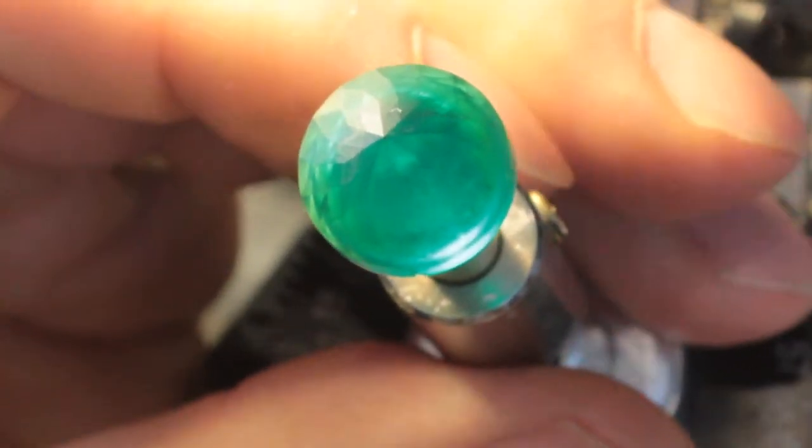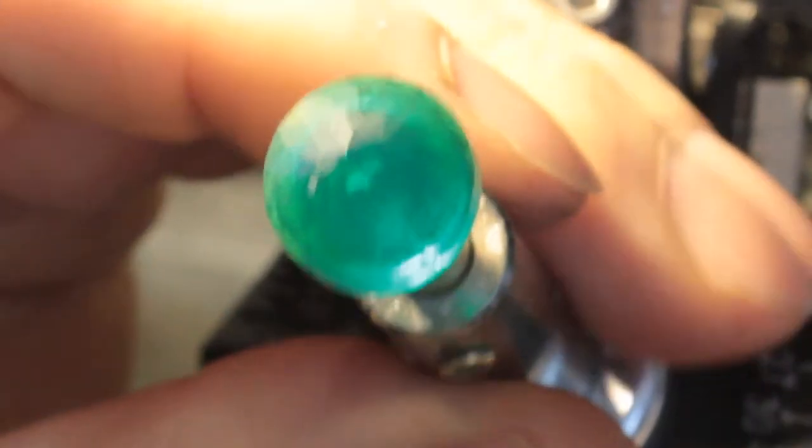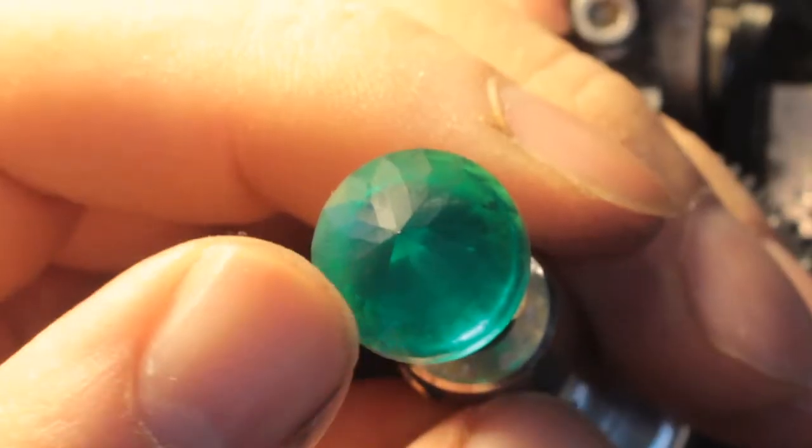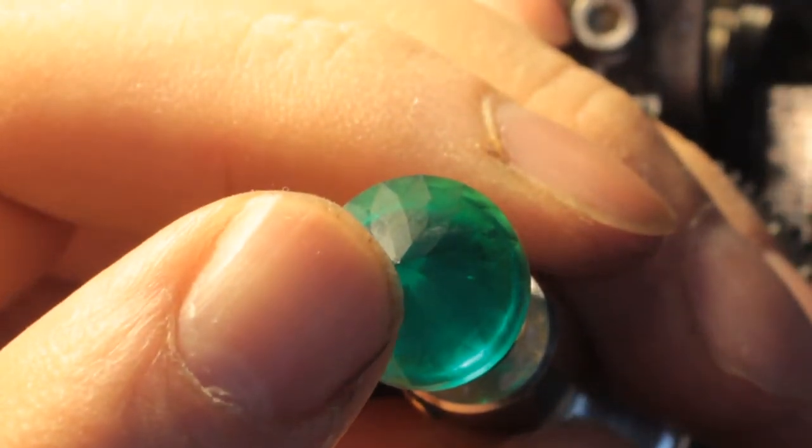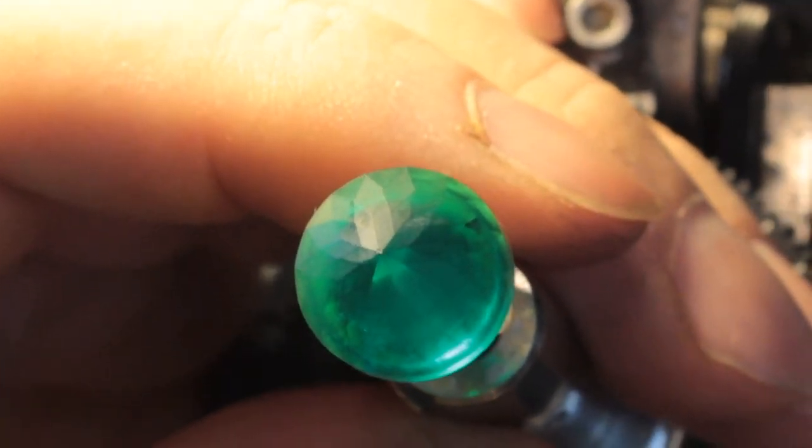Ready to start the final pre polish with 3000 grit diamond on a bat lap. And so there's a tiny, tiny bit yet to close up on the culet. We'll get that closed up.